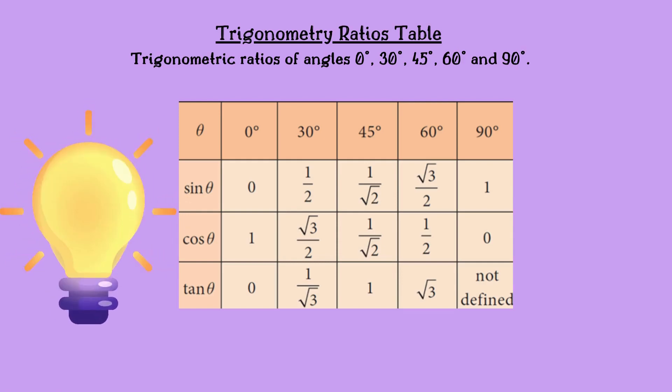Now see the values for sine. 0 degree is 0, sine 30 degree is 1 by 2, sin 45 is 1 by root 2, sine 60 is root 3 by 2, sin 90 is 1.